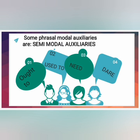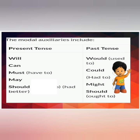The modal auxiliaries include present tense and past tense forms. For will, the past tense is would. We can use 'used to' in semi-modals. For can, could is the past tense. For must, we can use 'have to' in present tense or 'had to' or 'must' in past tense. For may in present tense, might is used in past tense.